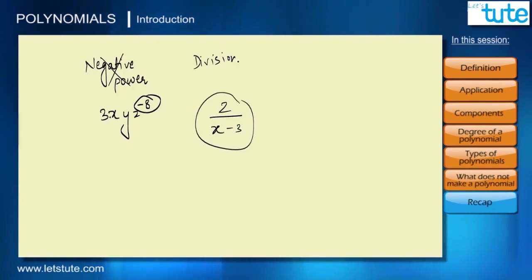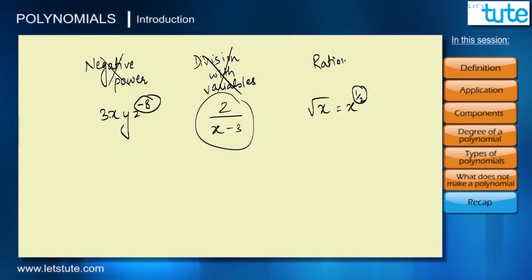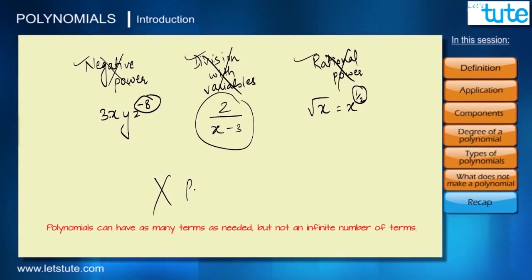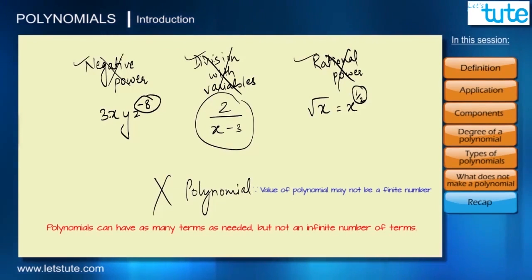Let's say we have √x. We can write this as x^(1/2), so we see the power is in fractions—it is rational. Rational power is not allowed. These are the features in a term that do not make a polynomial. As soon as we see these features, we will know it will not make a polynomial.